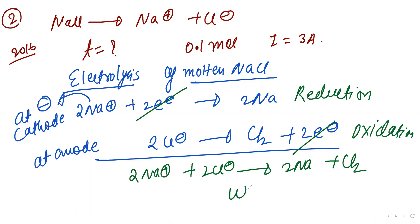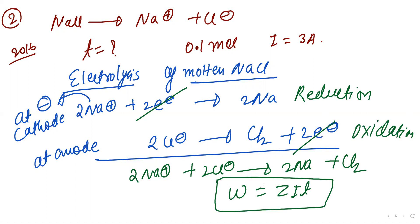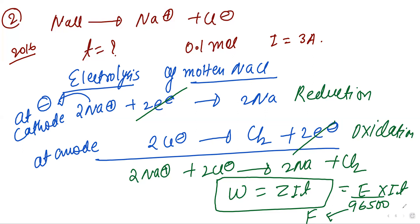According to Faraday's First Law: W = Z·i·t, where Z equals equivalent mass divided by Faraday constant, which is 96,500 coulombs. Now put in the values.